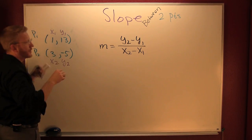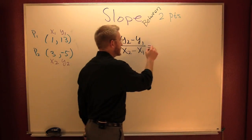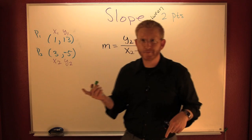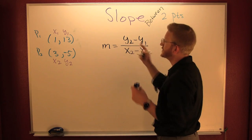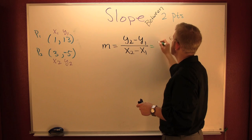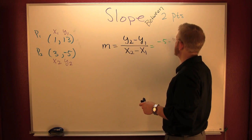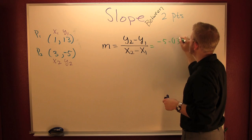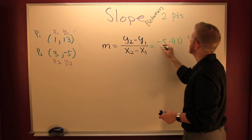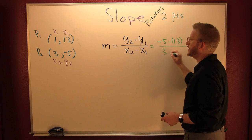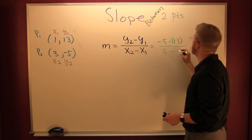Plug it in. So let's go ahead and plug them in. My Y2 is a minus five. Minus what's my Y1? Oh yeah, it's 13. All over X2, three, minus X1, one.